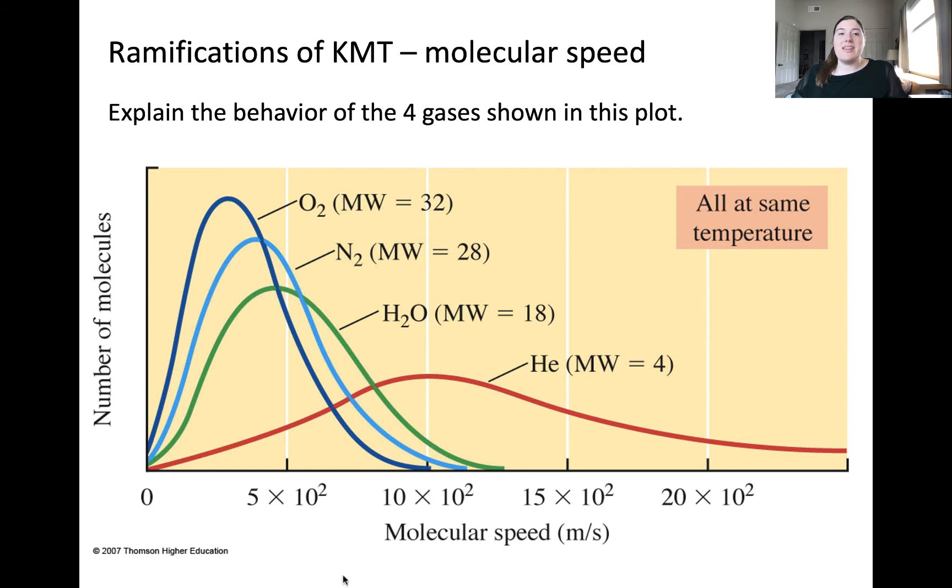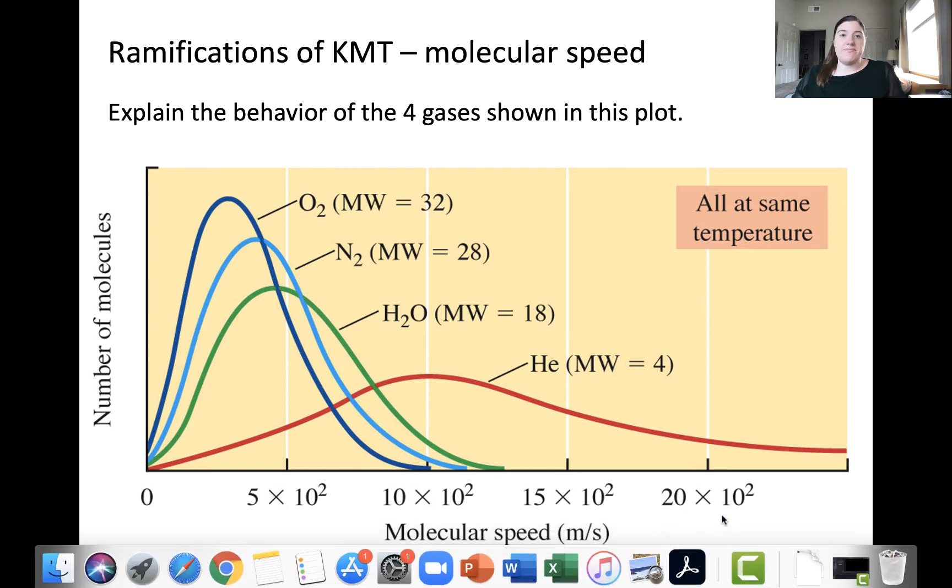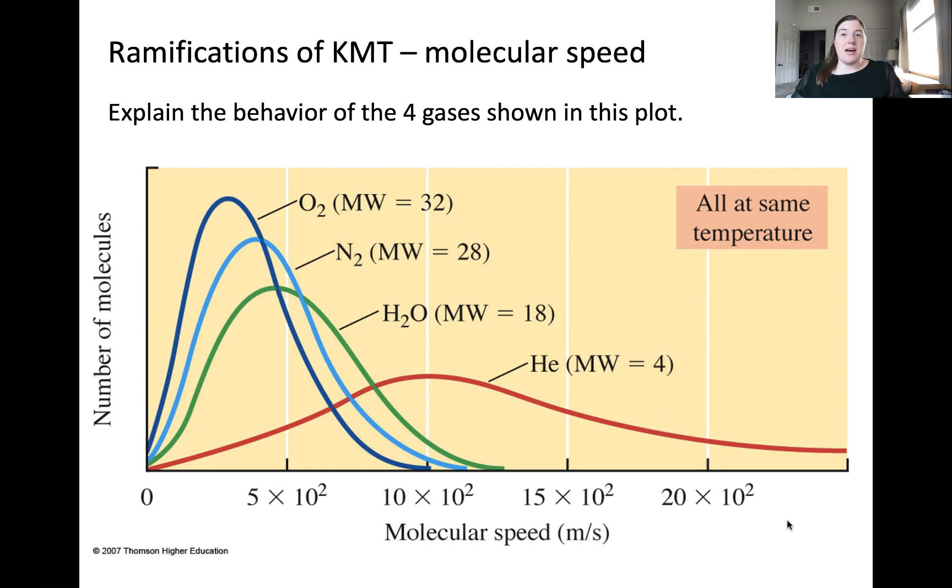When observing the difference in the most probable speed of these two gases, what do you notice? The most probable speed of helium is much faster than that of oxygen. It appears from this plot that the most probable speed increases as the molar mass of the gas sample decreases. Let's explore this in some more detail.